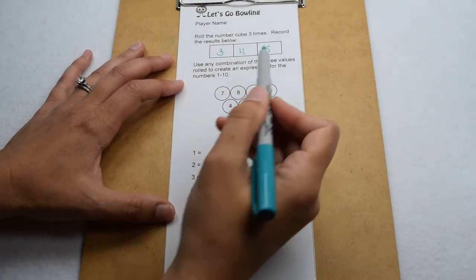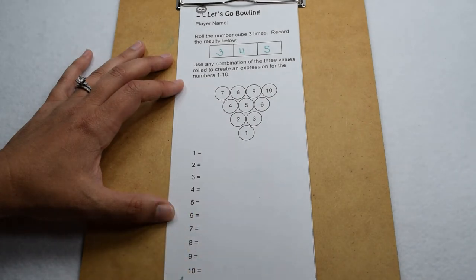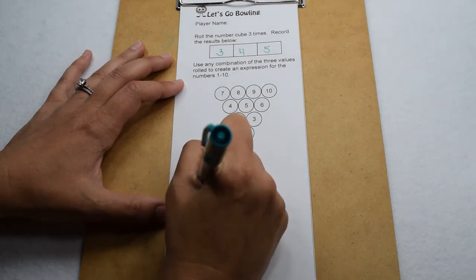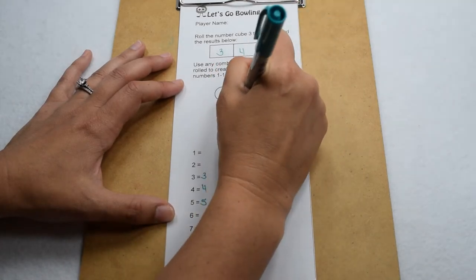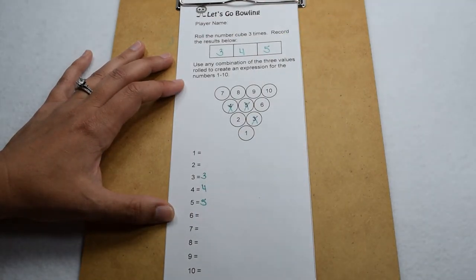Now we're going to take our three, four, and five and use them to come up with the values one through ten. Well, we can start by crossing off our three, our four, and our five. Three equals three, four equals four, five equals five, so there's three pins we have down right away.